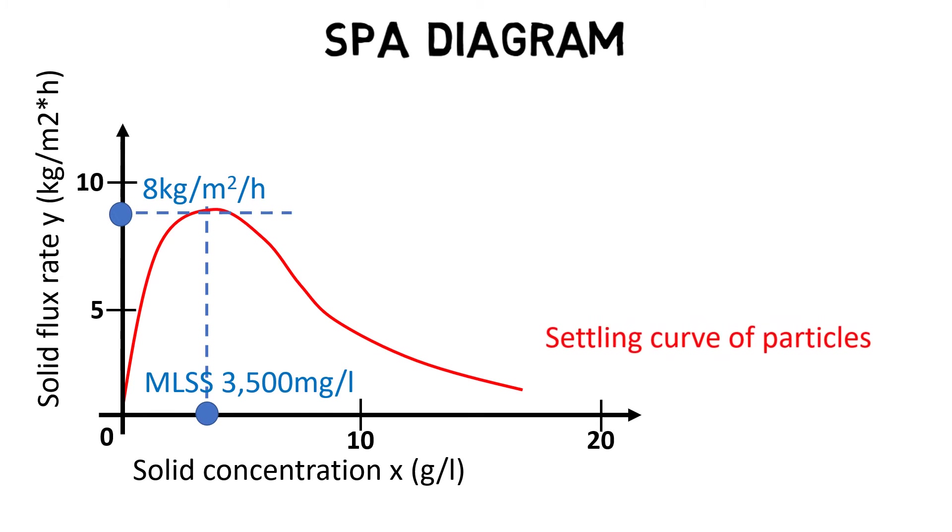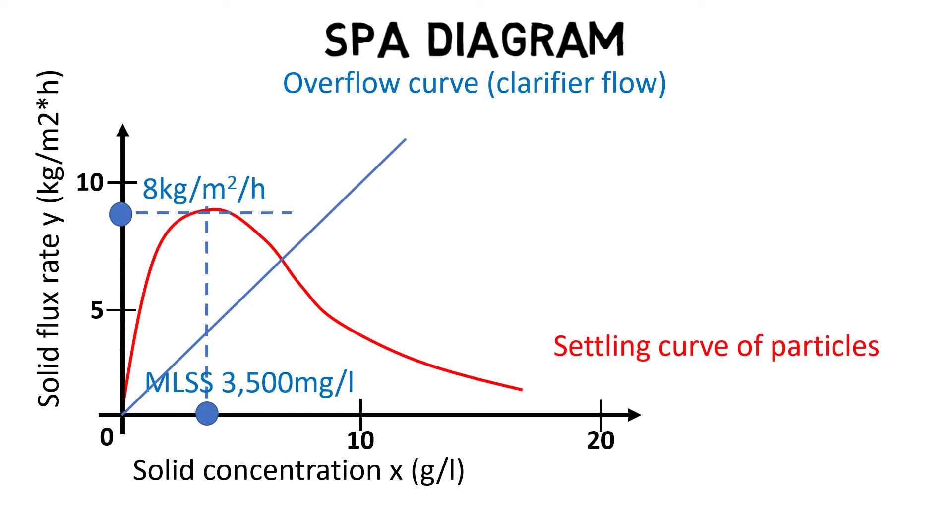Two, the overflow line represents the surface overflow rate SOR of the clarifier. The SOR is calculated by dividing the influent flow by the clarifier surface area and can therefore be adjusted by changing the influent flow rate. For example, decreasing the flow rate to the clarifier will flatten the curve, whereas increasing the flow rate will steepen the curve.